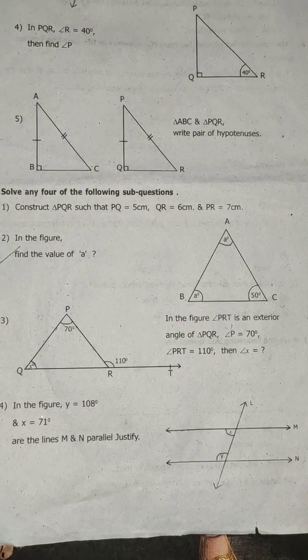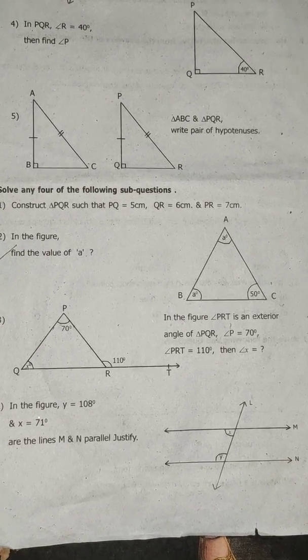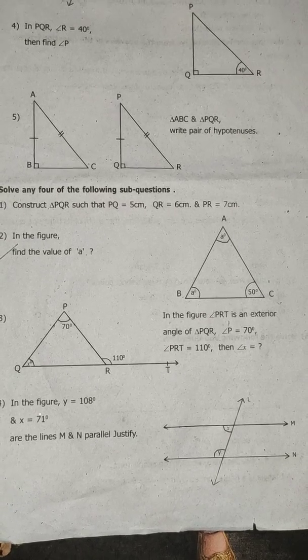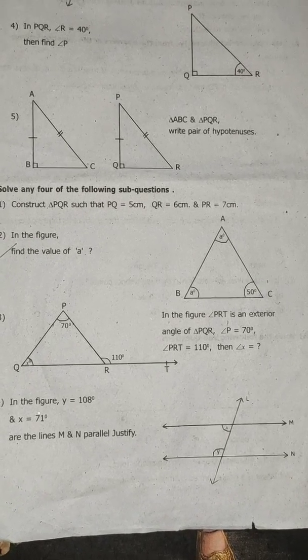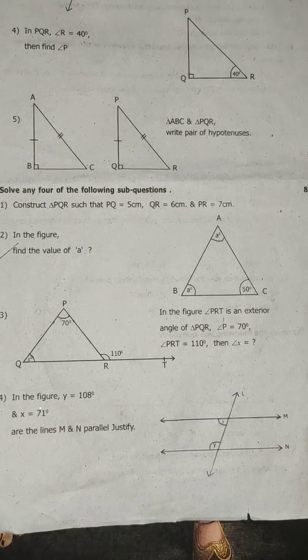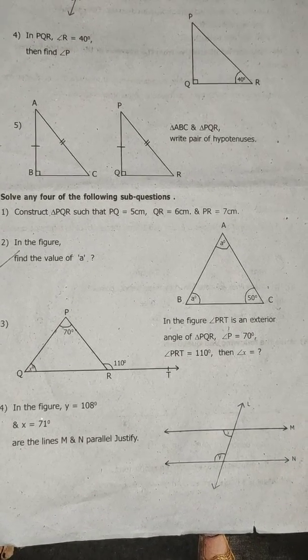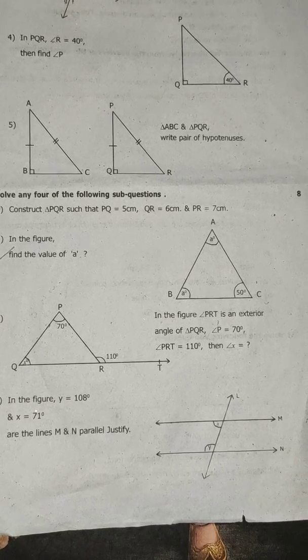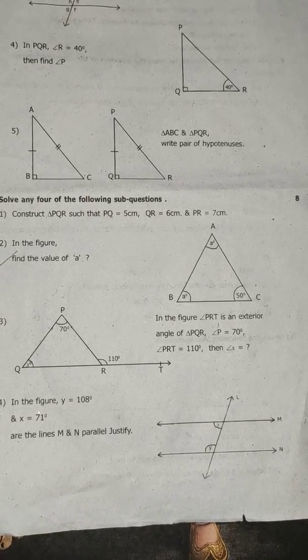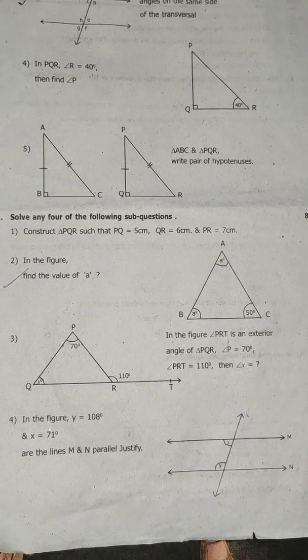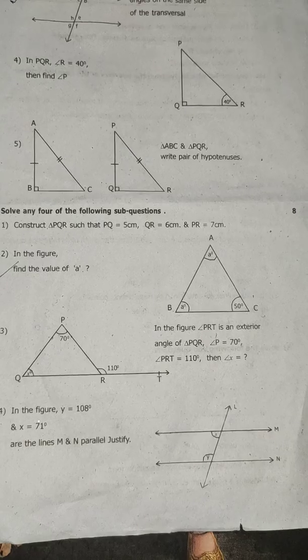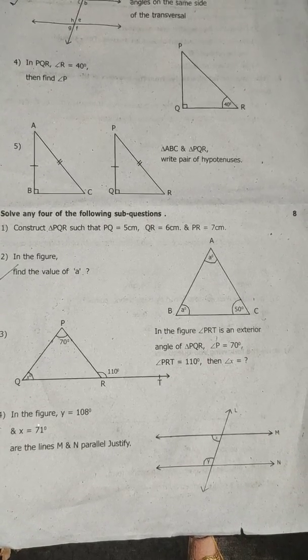In the figure, find the value of A. In the figure, angle PRT is an exterior angle of angle PQR. Angle P is equal to 70 degrees, angle PRT is equal to 110 degrees, then find angle X.